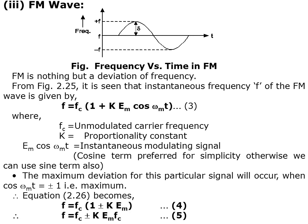E_M·cos(ω_M·t) is the instantaneous modulating signal. The cosine term is preferred for simplicity, although the sine term can be used as well. The maximum deviation occurs when cos(ω_M·t) equals ±1, which is the maximum. The equation then becomes F equals F_C·(1 + K·E_M), and F equals F_C ± K·E_M·F_C.